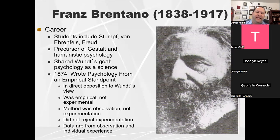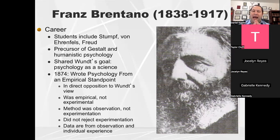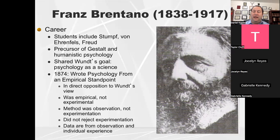In terms of his major accomplishments, Brentano wrote Psychology from an Empirical Standpoint. While he shared the same vision as Wundt to turn psychology into a science, he disagreed on how to measure psychology. He was directly opposed to the concept of introspection and was more empirical — meaning observational. He took direct observation from experience versus Wundt, who focused more on sensation and perception through careful experimentation.